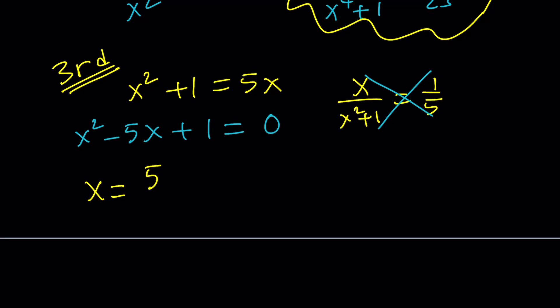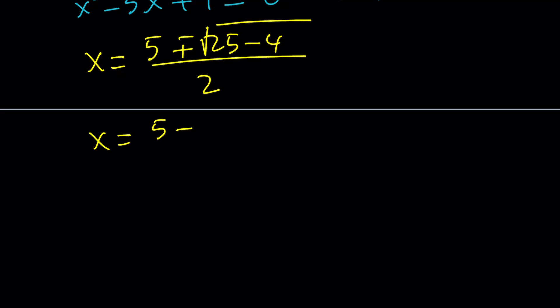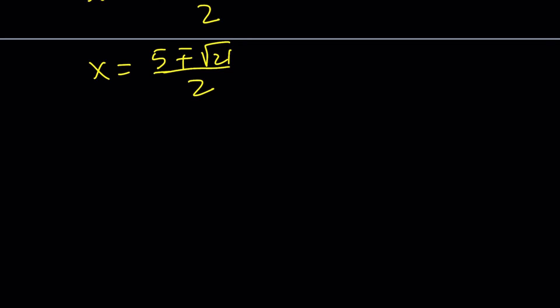Negative b plus minus the square root of b squared, which is 25, minus 4ac, which is 4. And all of that is divided by 2. And from here, x becomes 5 plus minus the square root of 21 divided by 2. So 21 doesn't contain any perfect squares. So we're going to leave it like this. And now is the time for the fun part. Substitution. Yay.